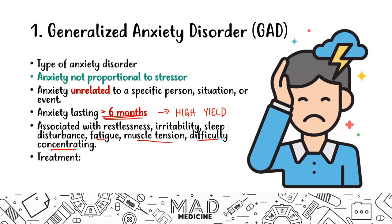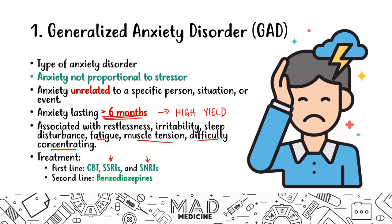Treatment for GAD is pretty straightforward. SSRIs and SNRIs are the first-line treatment, along with cognitive behavioral therapy. If that does not work, you want to give benzodiazepines. You've got to be careful with benzodiazepines because of their abuse potential, as well as their ability to slow someone's physical state down — benzos are downers. Definitely watch out for the side effects of benzodiazepines. That's pretty much all you need to know for generalized anxiety disorder for Step 1.